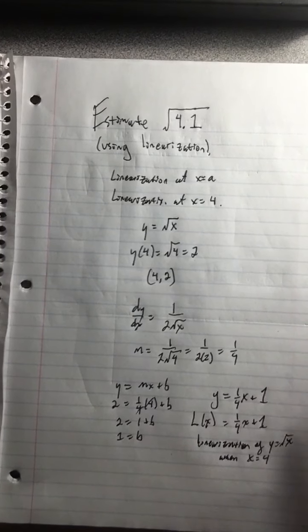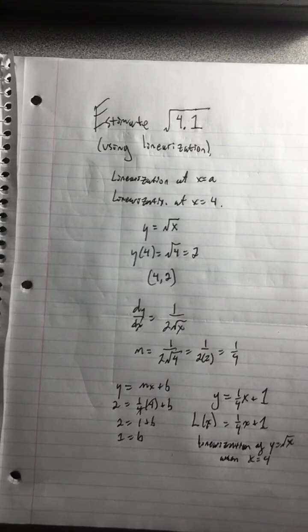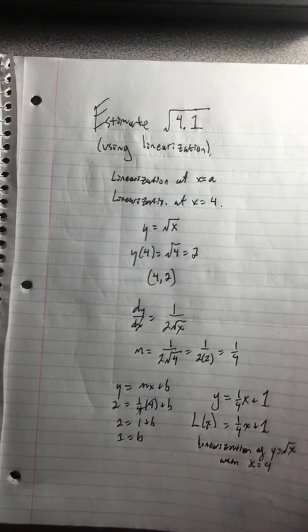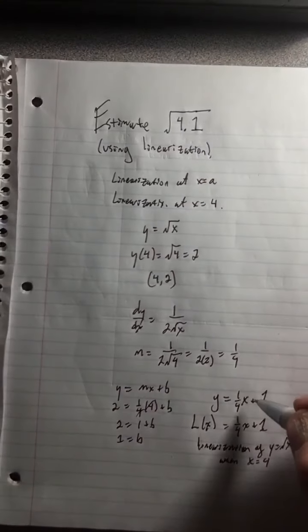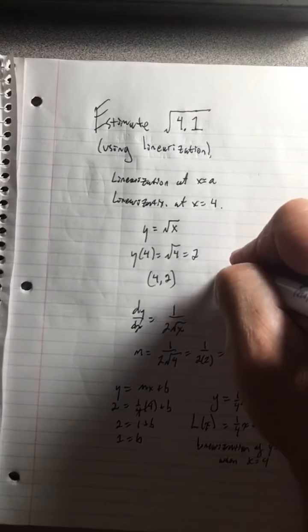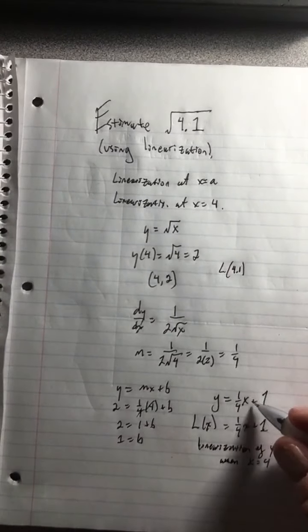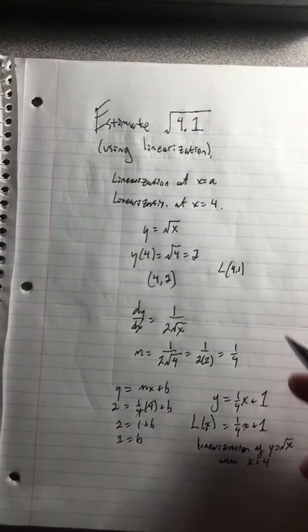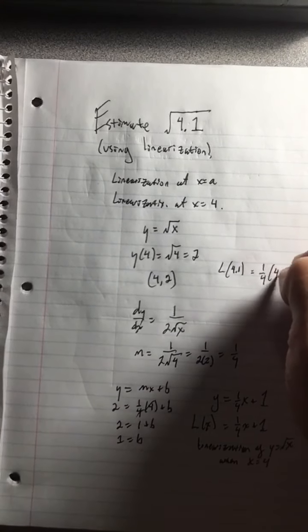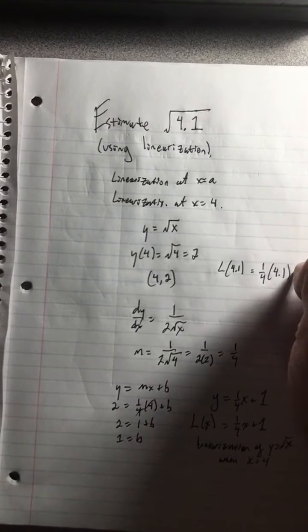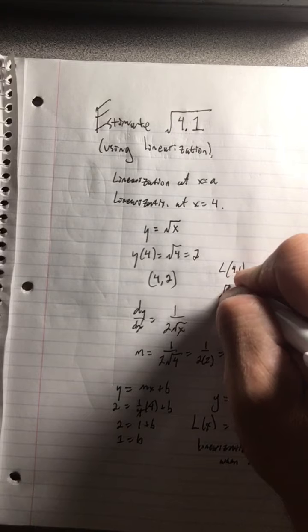Now, how are we going to estimate the square root of 4.1? Well, this tangent line hugs the square root curve. Remember, we just saw a picture of it. So instead of sticking 4.1 into the square root, we'll just stick it in here. So we'll find what is L of 4.1. In other words, what is the value of this line when x is 4.1? So we go 1 fourth of 4.1, and then we add the 1. And whatever that is, that's your estimate for the square root of 4.1.